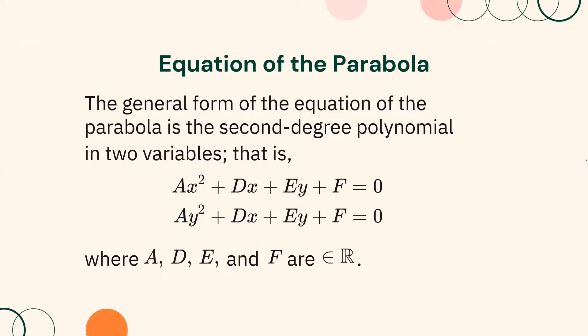We have also defined the general equation of a parabola as a second-degree polynomial in two variables — that is, ax squared plus dx plus ey plus f equals zero, or ay squared plus dx plus ey plus f equals zero, where a, d, e, and f are elements of real numbers.